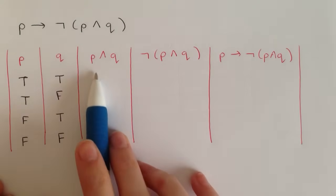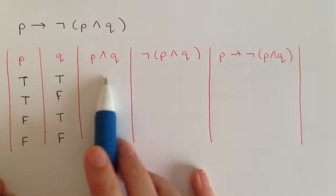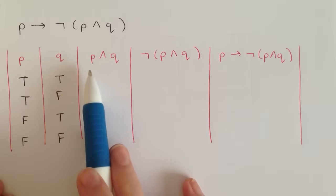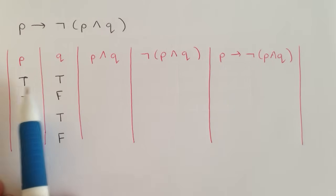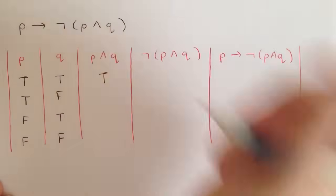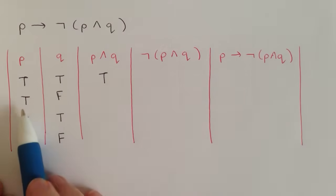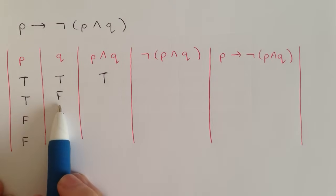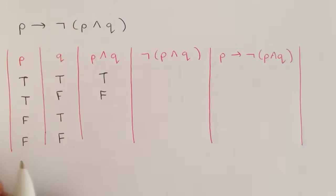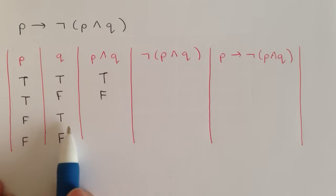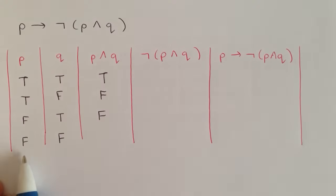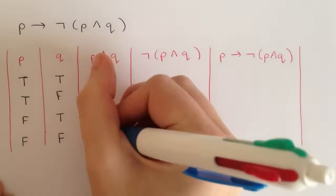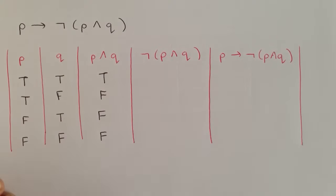Then we go into the p and q column. What that is saying is we want true in both the p column and the q column. So p is true and q is true, therefore p and q is true. p is true and q is false — you don't have true in both columns, so that is false. False and true — also false. False and false — also false.